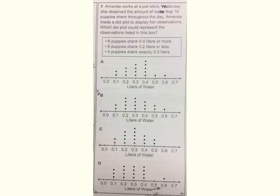Number seven. Amanda works at a pet store. Yesterday, she observed the amount of water that 16 puppies drank throughout the day. Amanda made a dot plot to display her observations. Which dot plot could represent the observations listed in this box? Six puppies drank four-tenths liters or more. Six puppies drank two-tenths liters or less. Four puppies drank exactly three-tenths liters.